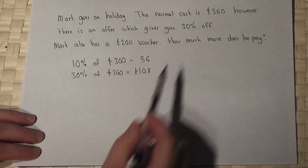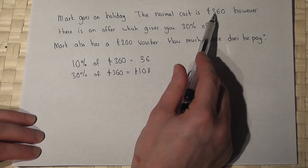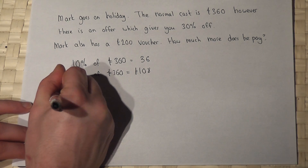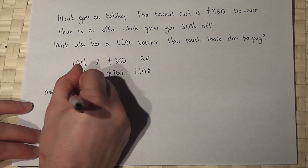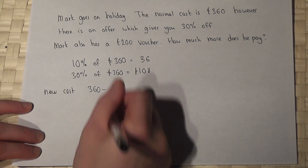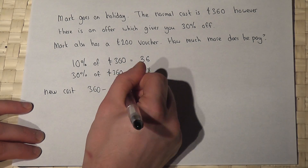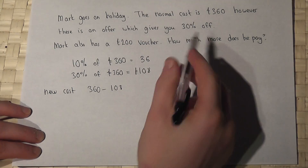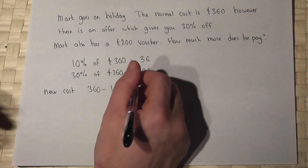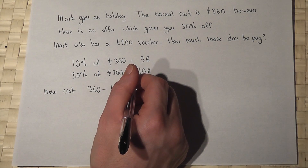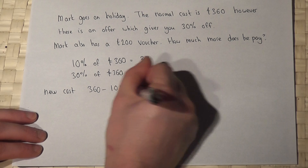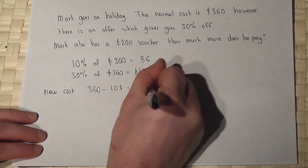Now this is off the initial amount. So therefore the new cost of the holiday is £360 take away £108. The word 'off' means subtracted from. So 360 take 108 just equals £252.